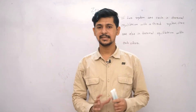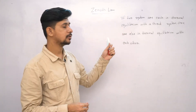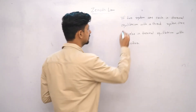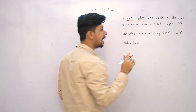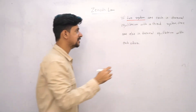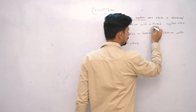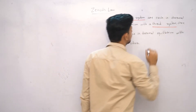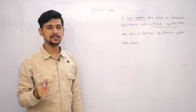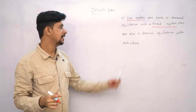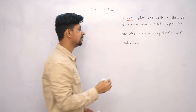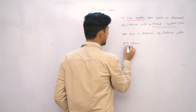Let's understand the Zeroth Law formally. The Zeroth Law states: if two systems are each in thermal equilibrium with a third system, they are also in thermal equilibrium with each other.